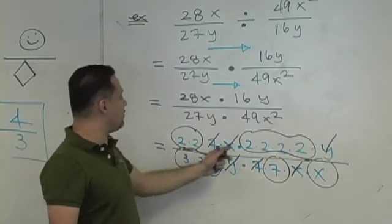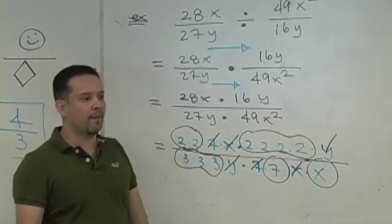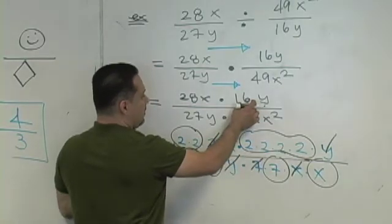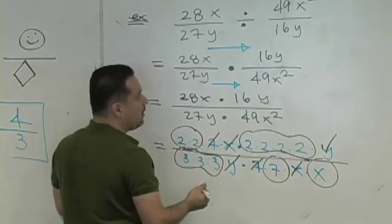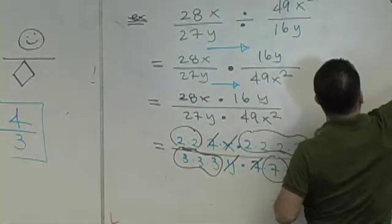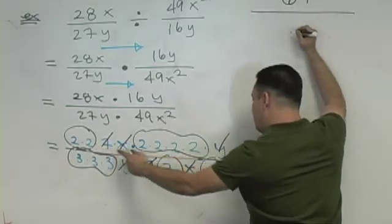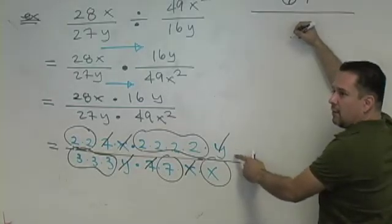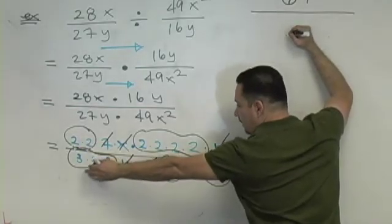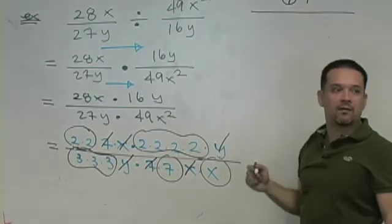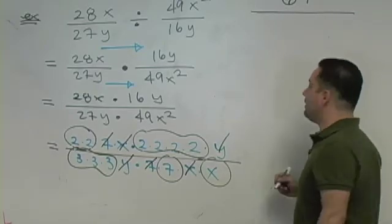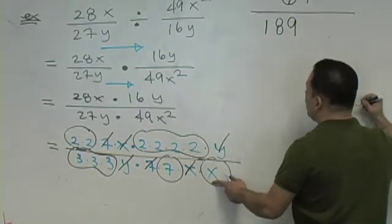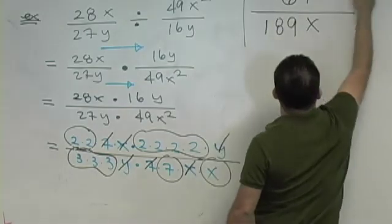So what's 2 times 2 times 2 times 2 times 2 times 2 times 2? We said four 2's is 16, times 4 more is 64. Are there any letters on top? No y — it's canceled. What about the numbers on the bottom? 27 times 7 is 189. Don't forget: 189 times x. And you are done. The answer is 64 over 189x.